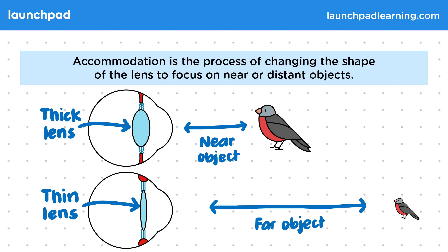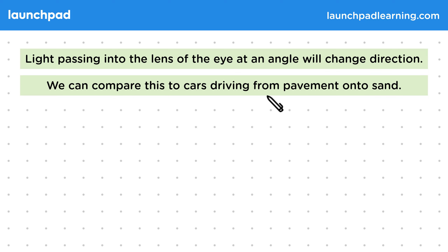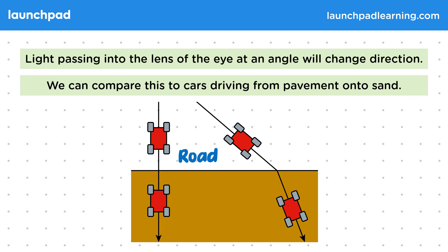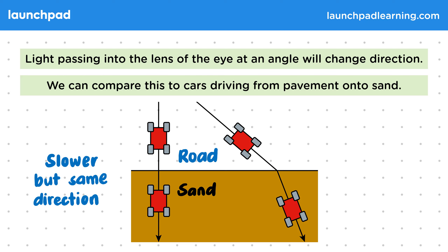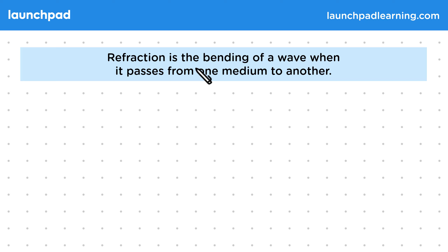So how does changing the lens thickness allow us to focus? Light passing into the lens of the eye at an angle will change direction. We can compare this to cars driving from pavement onto sand. Cars approaching the sand head on will slow down but keep the same direction, while cars approaching at an angle will slow down and change direction — which is also true for light entering the lens. What do we call this bending of light?